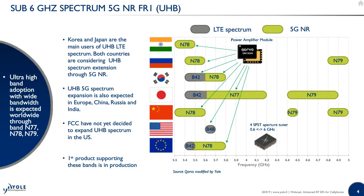For 5G, looking at the spectrum defined by 3GPP, they have divided it into two segments. The first is the sub-6 GHz segment, also called FR1 band, which includes the N77, N78, and N79 bands. Initially Korea and Japan are the main users of this also called ultra-high band LTE spectrum, and then it will expand into Europe, China, Russia, and the rest of the world. The first products supporting these bands are already in production.